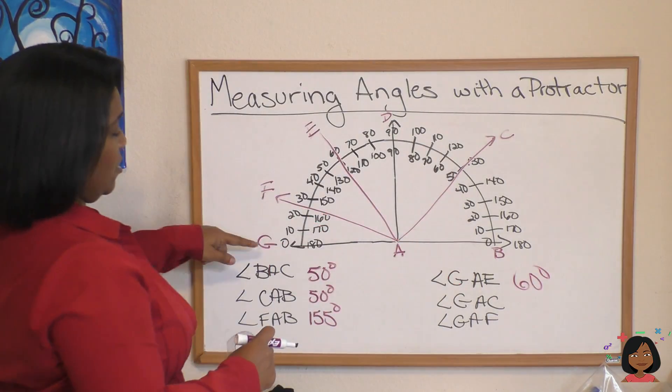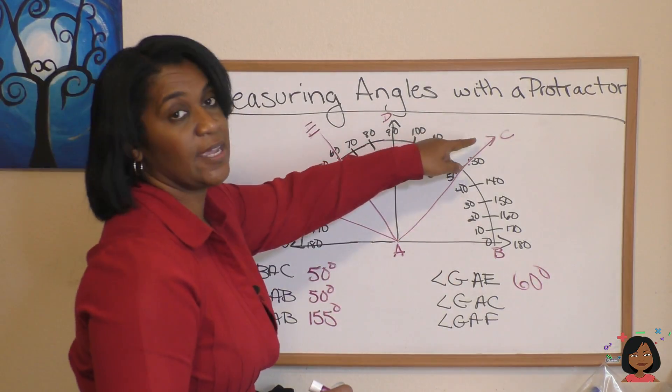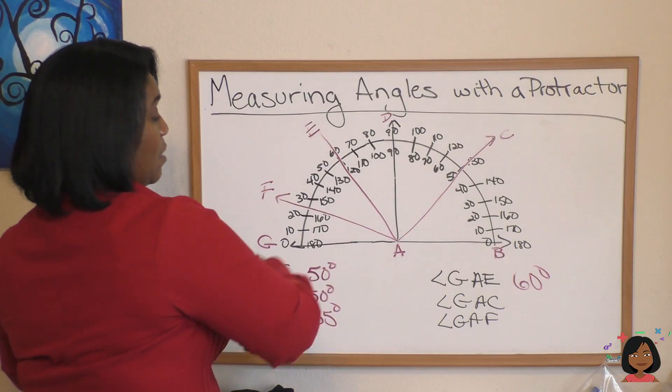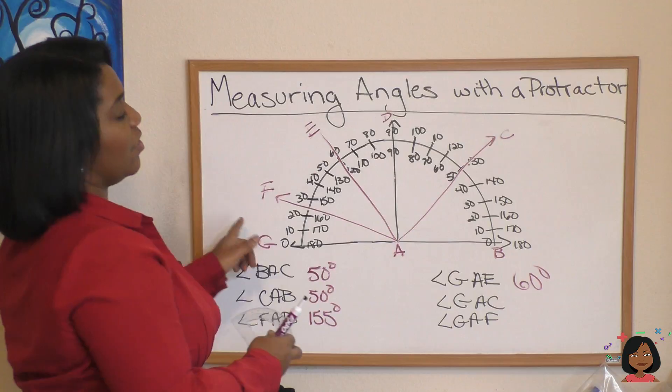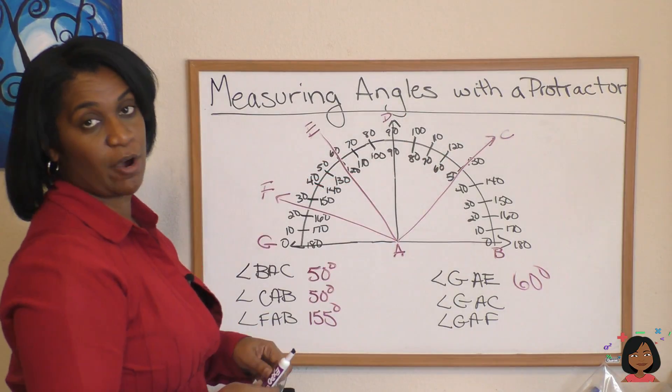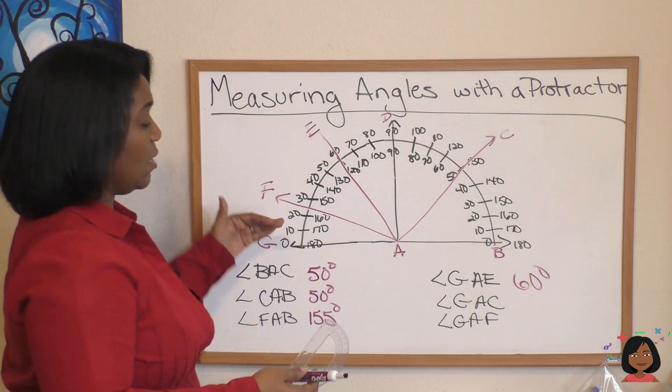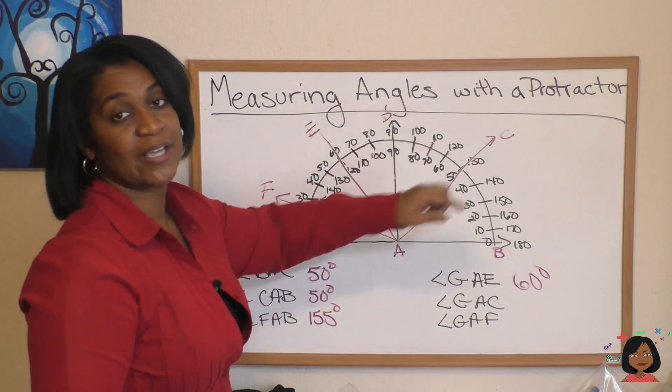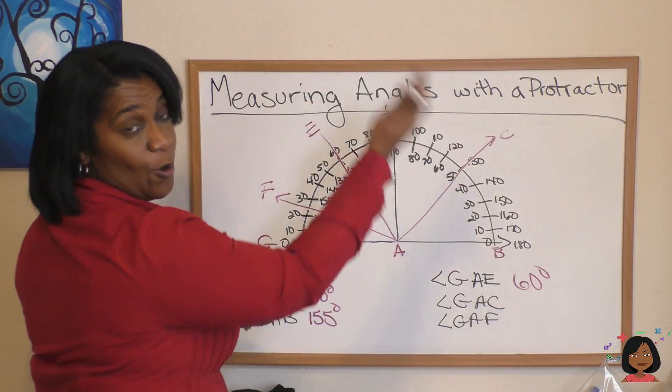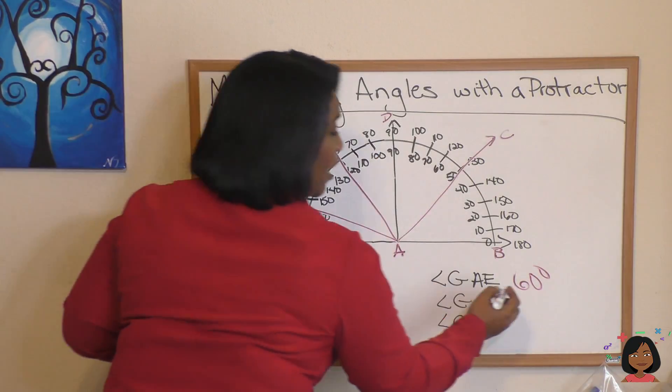GAC. It is more than 90 degrees. It goes all the way to the 130 degree mark. And again, it's an obtuse angle, more than 90 degrees, but we are using the outside to measure it because of how it opens up. So our answer is 130.